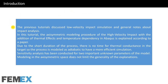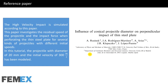In this tutorial, the axisymmetric modeling procedure of the high velocity impact with the addition of thermal effects and temperature dependency in Abacus is explained according to a paper. Due to the short duration of the process, there is no time for thermal conductance in the target, so the process is modeled as adiabatic to have a more efficient simulation. Sensitivity analysis has been conducted for two important unknown parameters of the model. Modeling in the axisymmetric space does not limit the generality of the explanations.